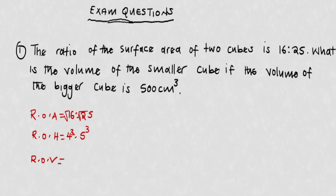4 raised to the power 3 is 64, because we are multiplying 4 by itself three times. 5 raised to the power 3 is 125. So the ratio of volumes is 64 to 125, and the bigger value represents the bigger volume. For the smaller cube, put x where there is the smaller value, and 500 where there is the bigger one.